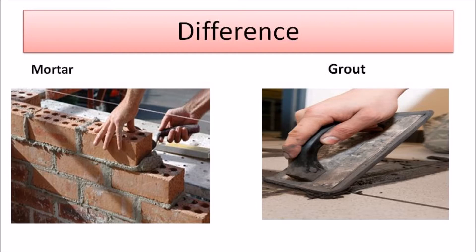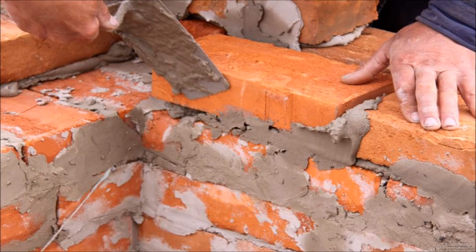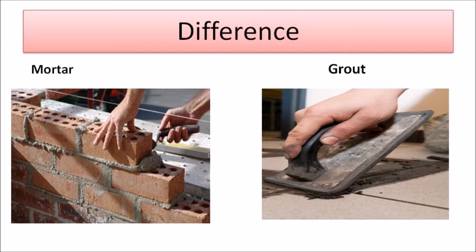First, let us talk about mortar. Mortar is a mixture of cement, sand, and water which is made into a thick paste that is used to bind two surfaces with each other. It is majorly used in building projects as a binding material between stones, concrete, and bricks.